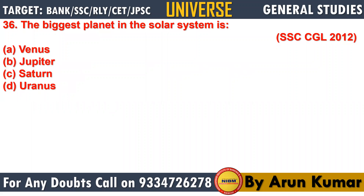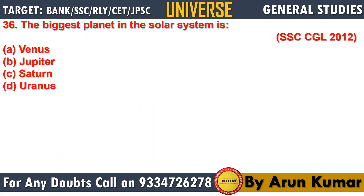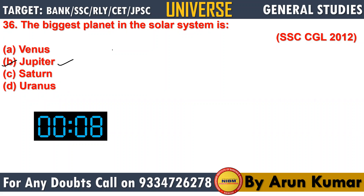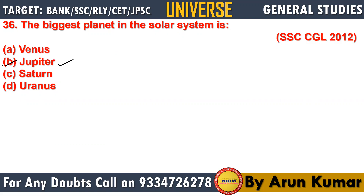Question number 36: the biggest planet in the solar system is Jupiter — very obvious. To remember the order of planets, use the mnemonic: Mercury Met Venus Every Night Until Saturn Jumped. This helps you recall the sequence in increasing order.